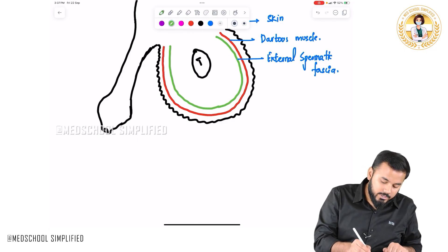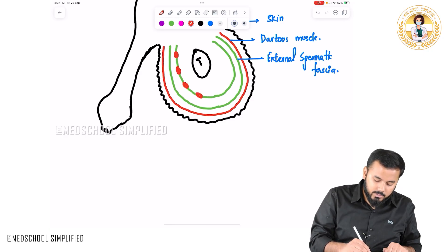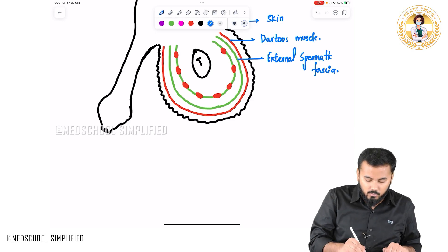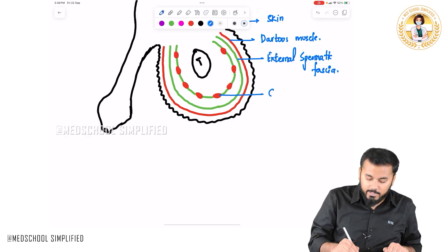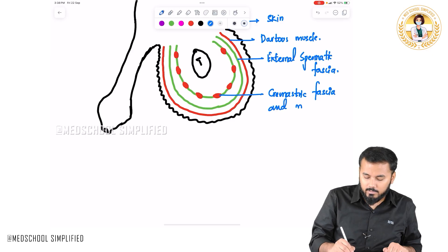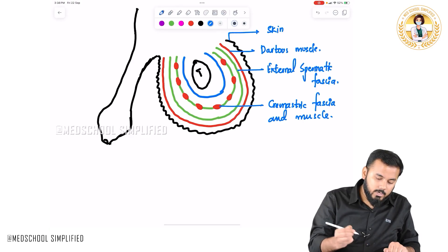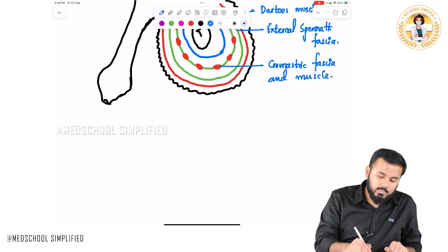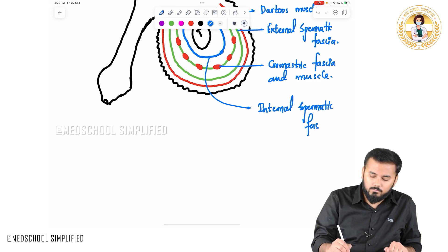There is another fascia layer, and in between the fascia you have a muscle. This muscle located between the fascial layers is called the cremasteric muscle. So the cremasteric fascia and muscle are located together. After that, the next important innermost layer covering the testis is called the internal spermatic fascia.